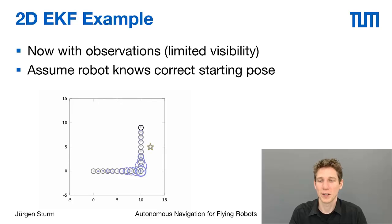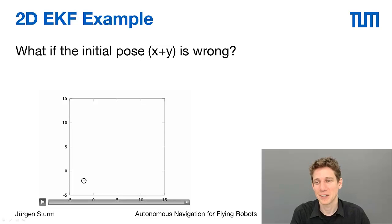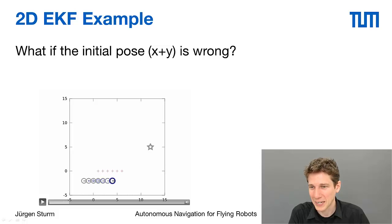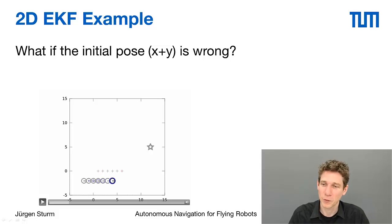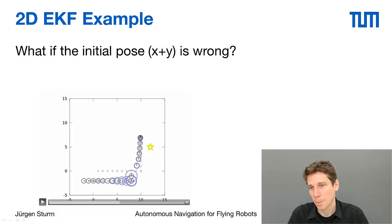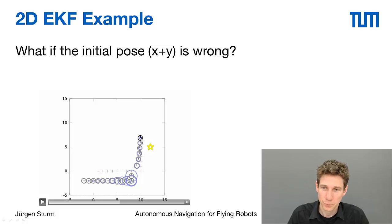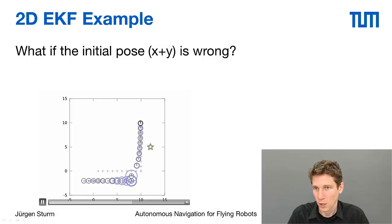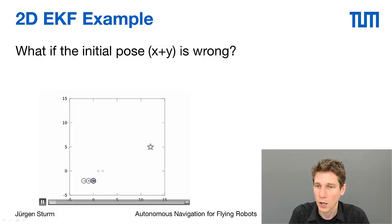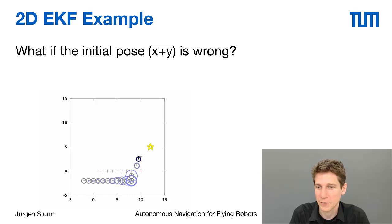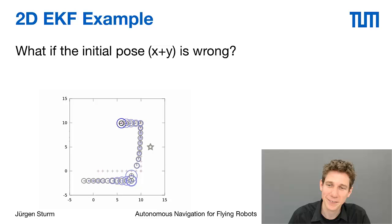So far we assumed the robot has a good initial position guess. Now let's assume it doesn't. The robot still moves from the origin — indicated by red crosses — but the Kalman filter, initialized with an incorrect initial guess, tracks a different location. As the robot moves the covariance grows. As soon as it detects the marker, it corrects its position using the marker observation and gets on track quickly. You can see how the marker observation pulls the state estimate to the right location.